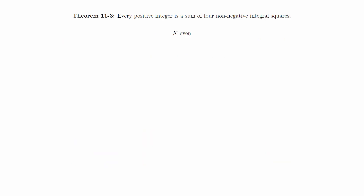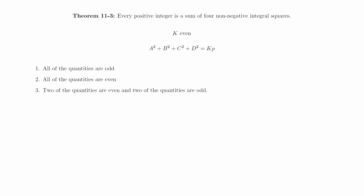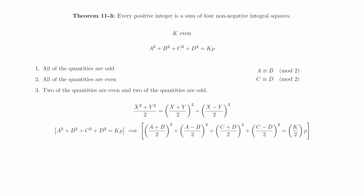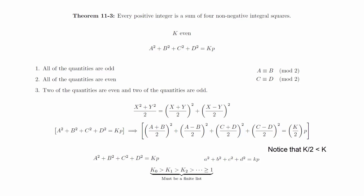We will now consider the case that capital K is even. We need to return to the original equation for this. In order for the left side to be even there are three possibilities: all the quantities are odd, all the quantities are even, or two of the quantities are even and two of the quantities are odd. By relabeling the terms we can always end up with the first two terms being of the same parity and the last two terms being of the same parity. We can use an algebraic trick to rewrite the equation in a helpful manner. Notice that all the terms in parentheses are integers. Therefore whenever capital K is greater than one we can take the equation of the form capital A squared plus B squared plus C squared plus D squared equals capital K times p and generate an equation little a squared plus b squared plus c squared plus d squared equals little k times p where little k is less than capital K. So by the method of descent it is possible to write p as the sum of four squares and this proves the theorem.